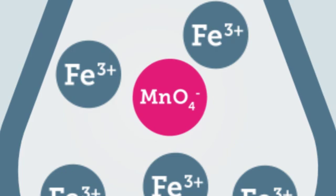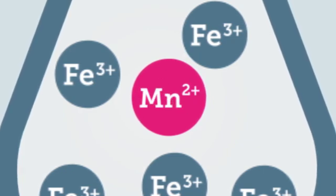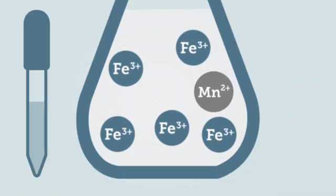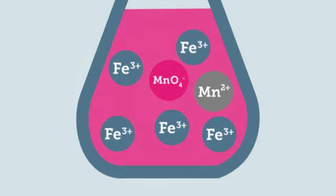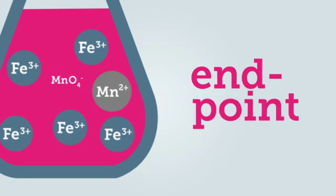Here, the manganese is initially in the 7+ oxidation state and is reduced to the 2+ oxidation state. There is no need for the addition of an indicator in this titration because the presence of the permanganate ions will turn the solution pink when there are no more Fe2+ ions to react with. This is the end point of the redox titration.